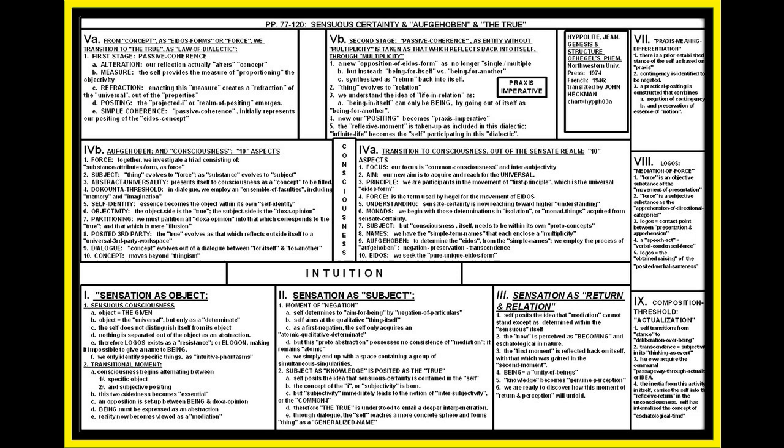Now if we look at 5A, we're going to move from concept as EIDAS form or force, and transition to the true as the law of dialectic. Now we start looking at relation instead of isolated EIDAS forms. The first stage is going to be passive coherence. Our reflection actually alters the concept. We begin to understand the self provides the measure of proportioning the objectivity of the thing observed, and enacting this measure creates a refraction of the universal out of the properties that veil the universal.